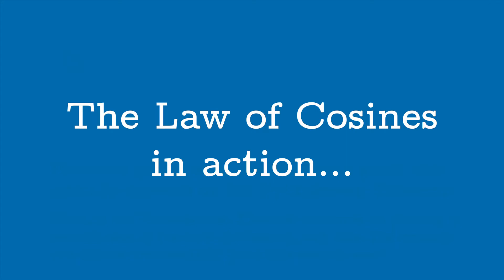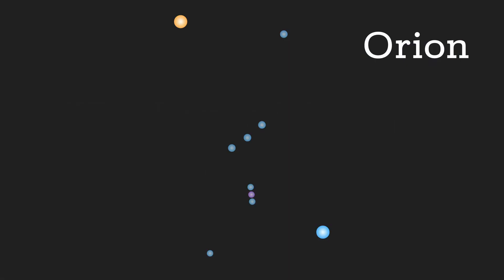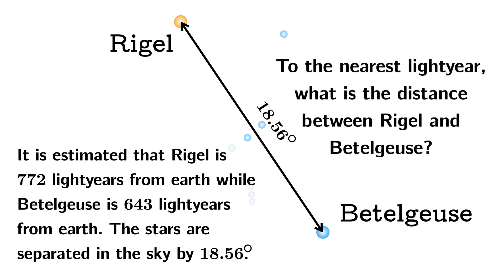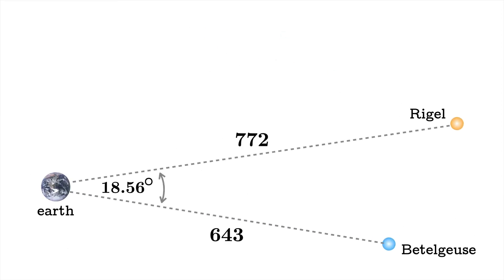Let's take a look at the law of cosines in action. The constellation of Orion is one of the most noticeable constellations in either hemisphere, and the two brightest stars are called Rigel and Betelgeuse. Rigel is estimated to be 772 light years from Earth, while Betelgeuse is 643 light years from Earth, and the stars are separated in the sky by 18.56 degrees. We want to find this distance — to the nearest light year — between Rigel and Betelgeuse, placing Earth, Rigel, and Betelgeuse all in one plane.